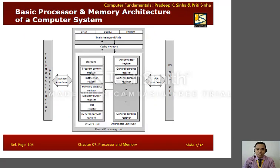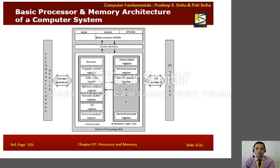Have a look at this. We have discussed last time that the brain of the computer is the central processing unit, and it consists of two parts. We have the control unit and the arithmetic logic unit. You are going to see here that there are different types of registers under the control unit and under the arithmetic logic unit, which we are going to discuss later. On top we have different types of main memory: ROM, PROM, and EPROM. And between the main memory and the central processing unit lies cache memory, which we are also going to discuss later.